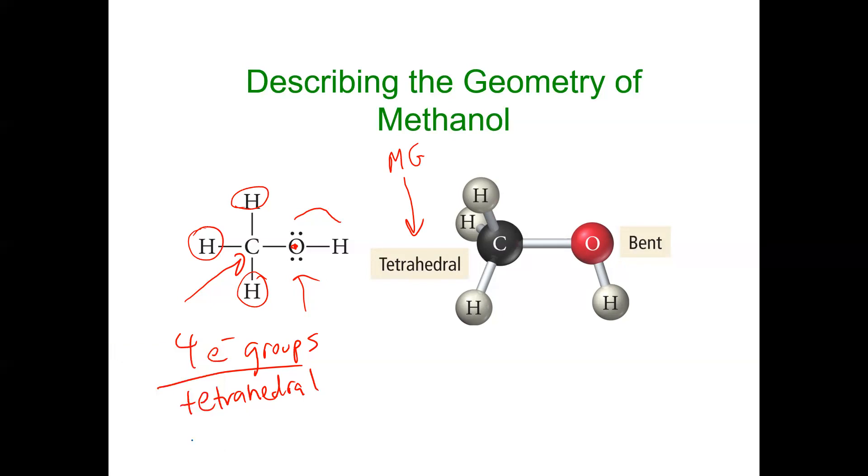Oxygen also has, if we look, four electron groups. It has one lone pair, two lone pairs, the third group is this hydrogen atom, and the fourth group is this carbon atom.